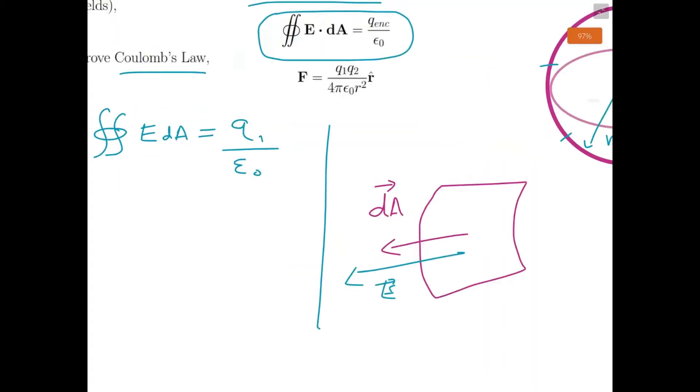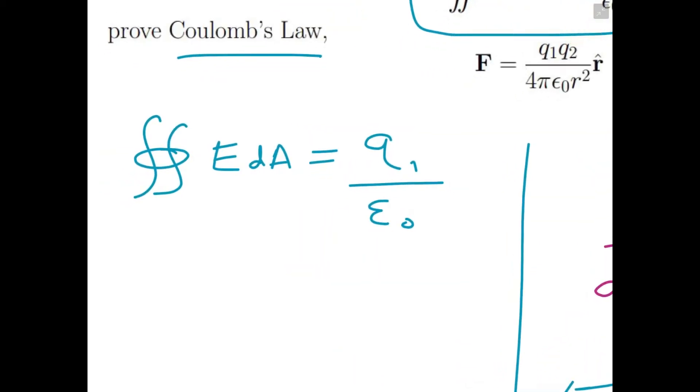We're all, let's say, r away from the center of the sphere. We'll all experience the same charge. So because of that symmetry, we can say that E does not depend on A—they don't depend on each other. So in this integral, E is essentially a constant because we're integrating over a fixed area.